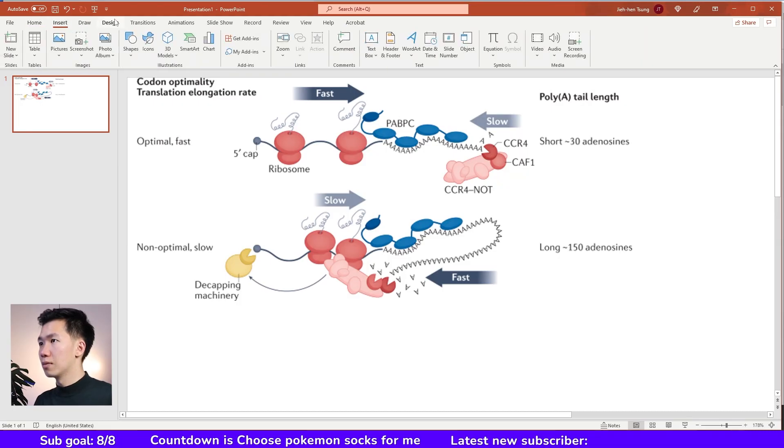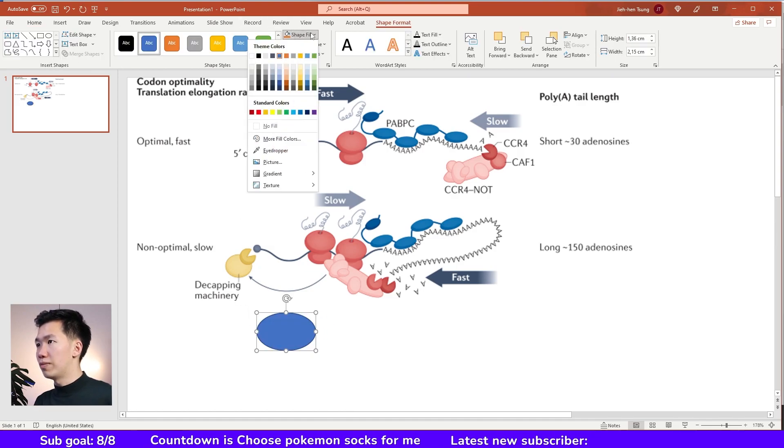Let's go to the home tab and grab the ellipse tool and draw an ellipse like this. Then open the shape fill tab and click on more color.